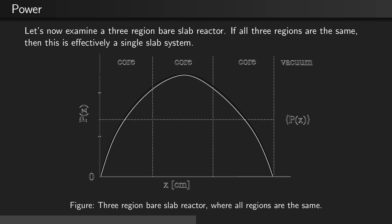For our second example, let's examine a three-region bare slab reactor. If all three regions are the same, we're left with the same homogeneous system that has the normal cosine shape, and the core average power sits at about 2 pi of the maximum power. This is exactly the same situation that we saw in the bare slab previously.